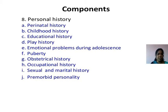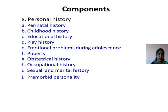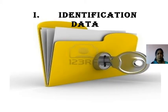In personal history, we will be taking prenatal history, childhood history, educational history, play history, emotional problems during adolescence, puberty, obstetric history, occupational history, sexual and marital history, and premorbid personality. These are the components we will be collecting.